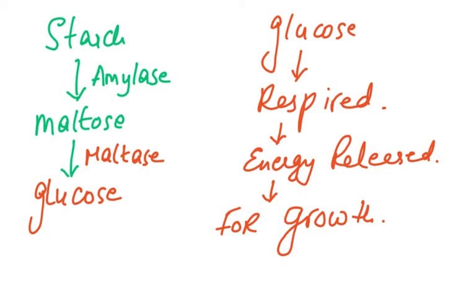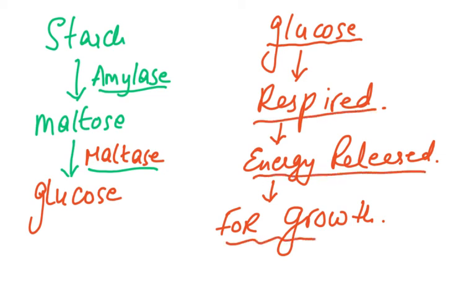When seeds are soaked, a chemical growth regulator is released which results in the production of enzymes, including amylase. The starch stored in the seed is converted to maltose by amylase, then maltose is converted to glucose, which is then respired to release energy needed for growth. In the dry state the seed remained dormant as starch, and the seed will not germinate if kept in a dry state.